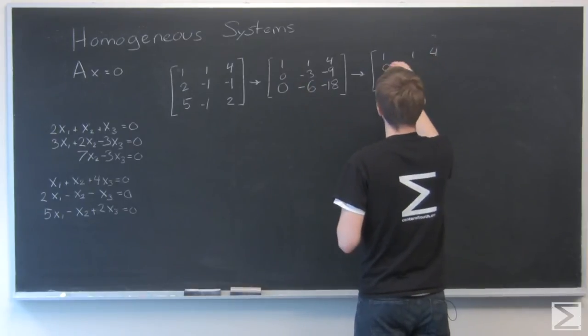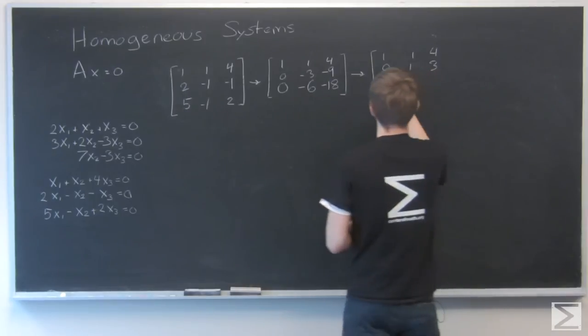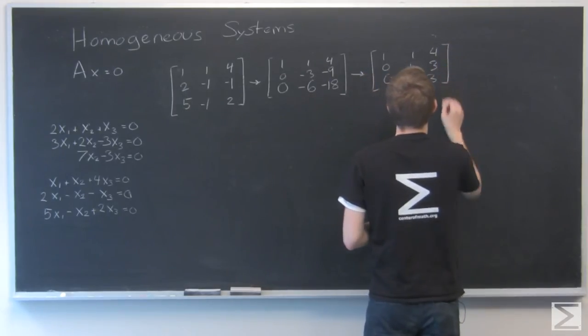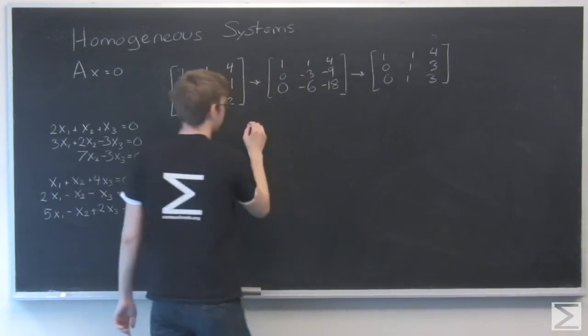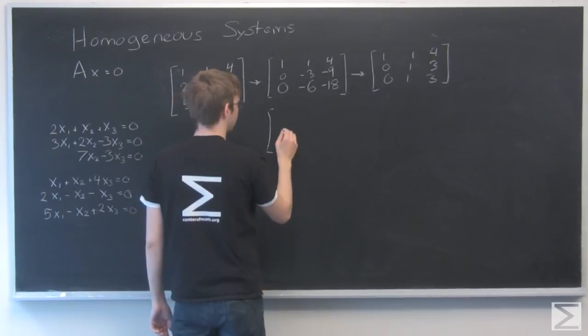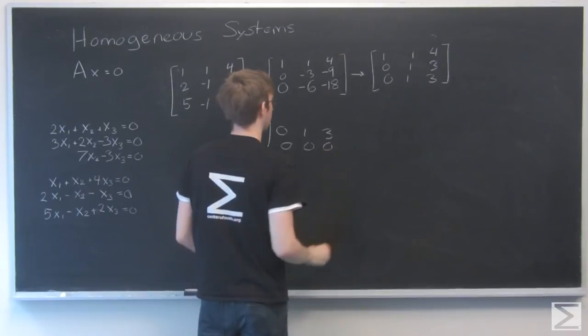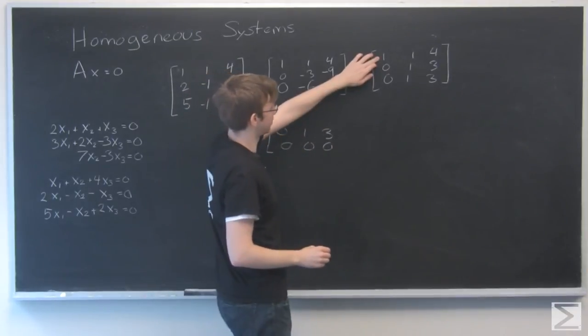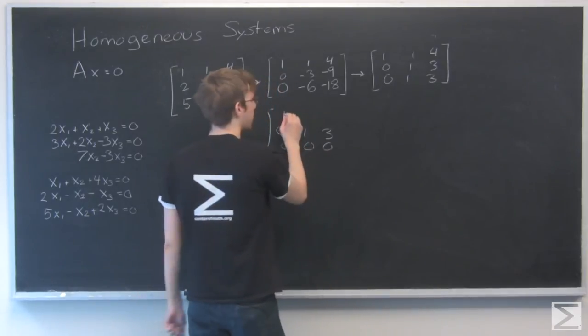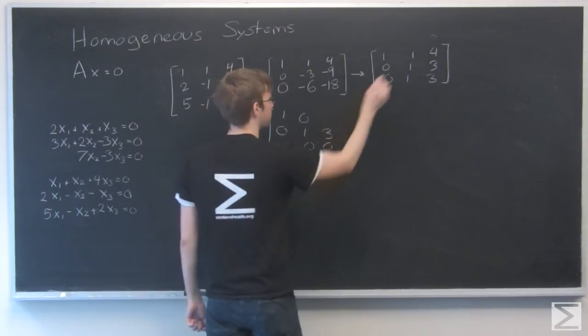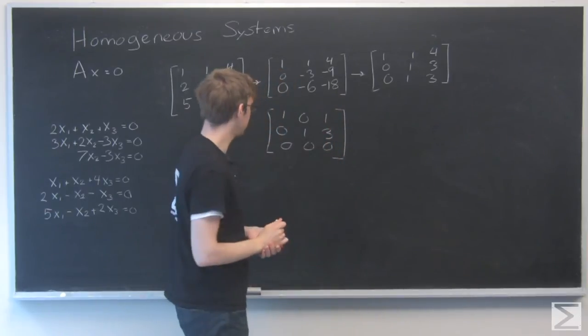I'm going to divide this row by negative 3 and get 0, 1, 3. I'm going to divide this row by negative 6 and get 0, 1, 3. Cool. I can subtract out that row completely. Now I'm going to take the first row minus the second row. 1 minus 1 is 0, 4 minus 3 is 1. Okay.